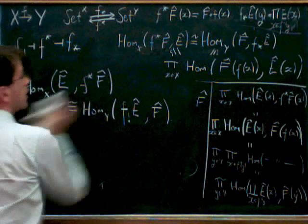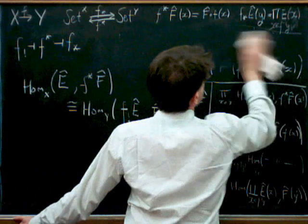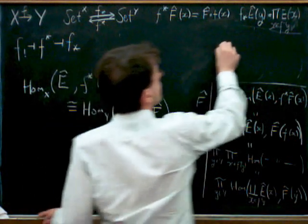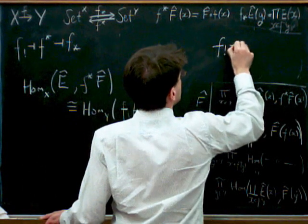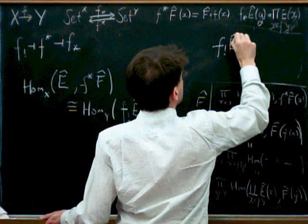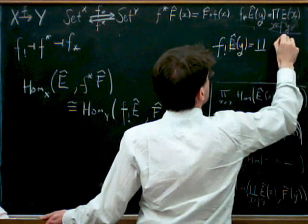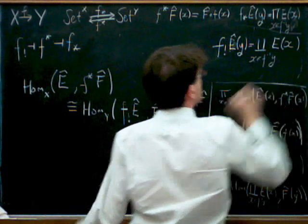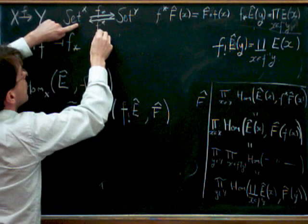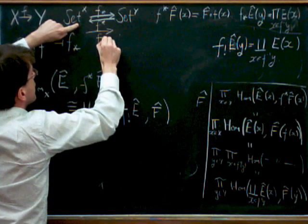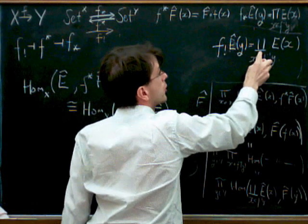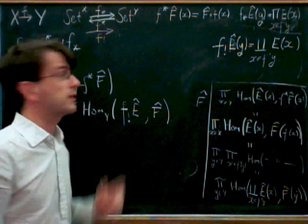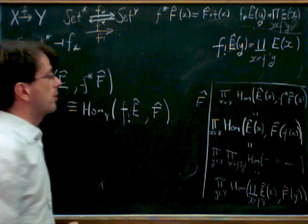Okay, so then we establish that this thing called F lower shriek is left adjoint to F upper star. So what we've just done is define F lower shriek here. So if we just took F lower shriek to be of E hat of Y to be the coproduct, we can define this push forward from bundles over X to bundles over Y in two different ways, either by taking the product over the fibers or the coproduct over the fibers of the preimages. And in that way, it turns out you get a right adjoint and a left adjoint of F star. So that's quite a sneaky little way we can come up with the left and right adjoint.